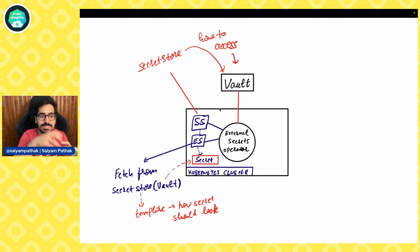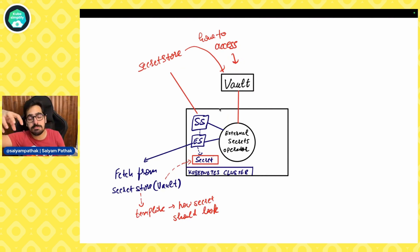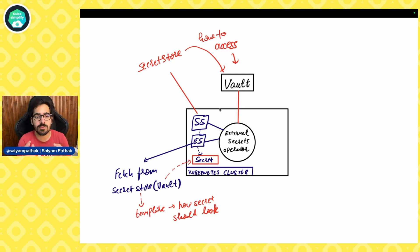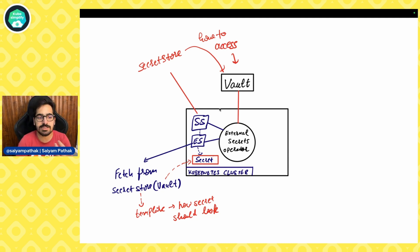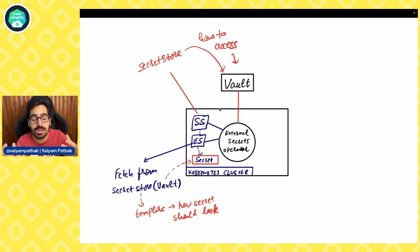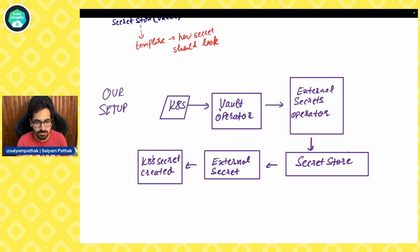The Secret Store is the custom resource that tells you how to access the external key management system — in this case, Vault. But if you go through the documentation, there are numerous providers supported. Moving on to the External Secret: here we define what we want to fetch from the Secret Store and what type of secret we want to create using templating. It fetches from the Secret Store and you can also define how your secret should look using a template, which is some of the advanced configuration you can do.